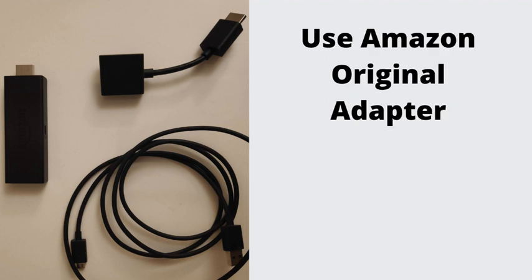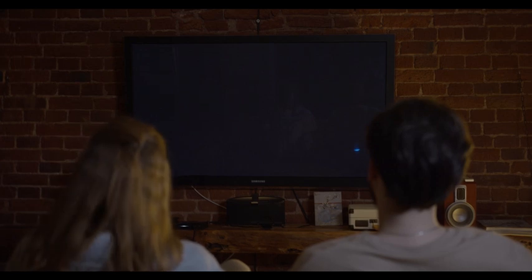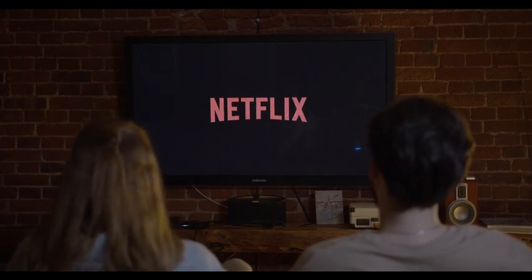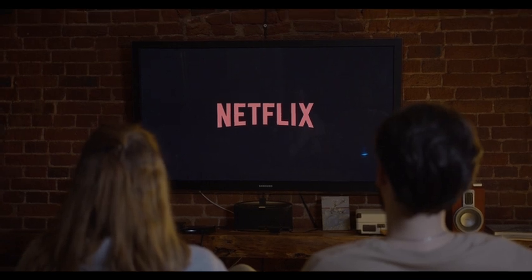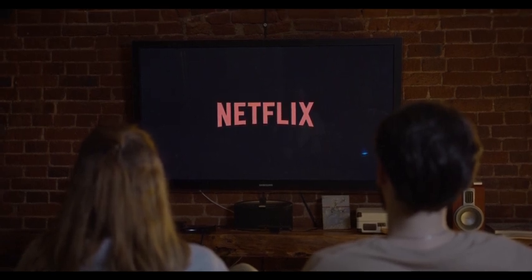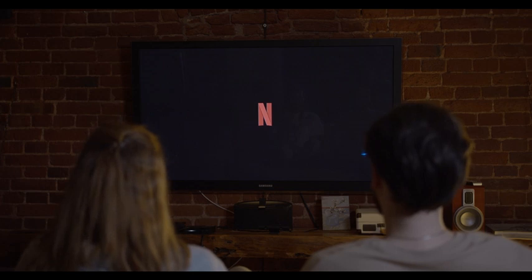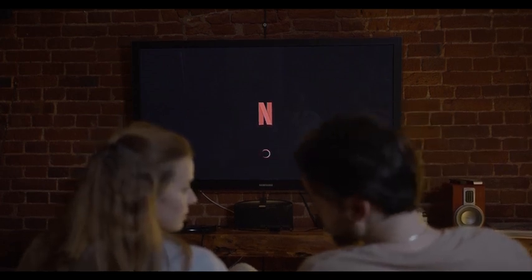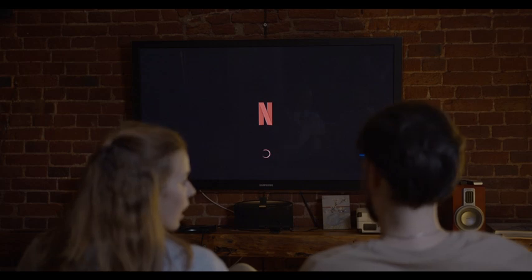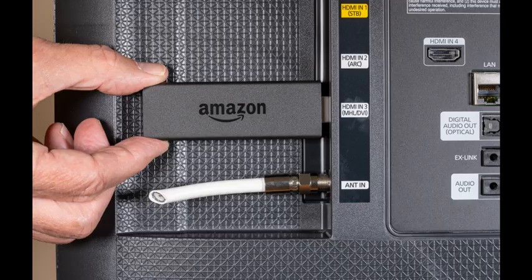Number 2: Use an Amazon Original Adapter. The same applies to the adapter. If you have already changed your cord to the OEM one and the loop persists, try changing your power adapter as well. Changing the adapter to a different one — not necessarily the Amazon one — can do the trick. But if that does not work, try getting the original Amazon adapter. Also, don't use the USB port on the TV; always use the power adapter to connect your Fire Stick.